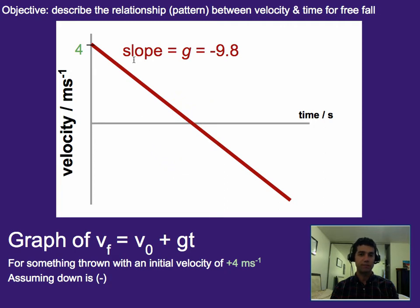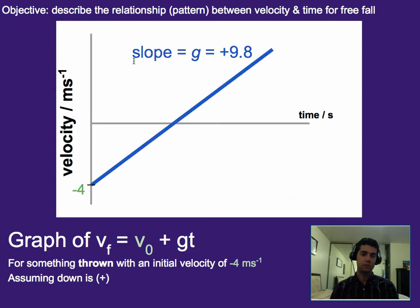And this is what the graph would look like. If instead we wanted to assume that down was positive, but for the same thing, an initial upward velocity of 4, then what that would look like is, well, up is negative now and down is positive, so it would just be a positive slope going the exact opposite direction, but same graph essentially.